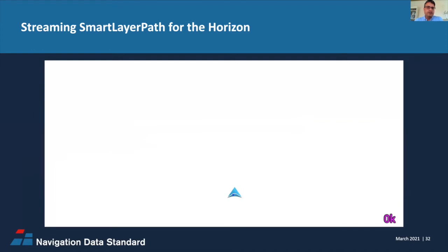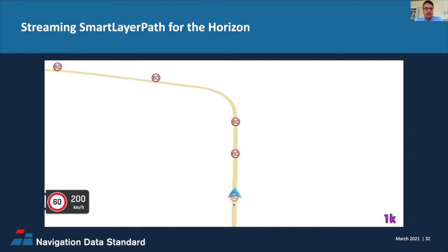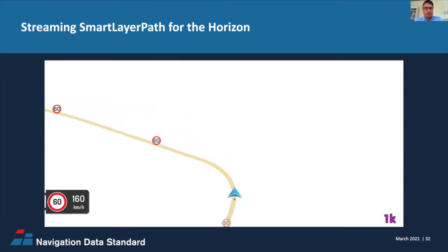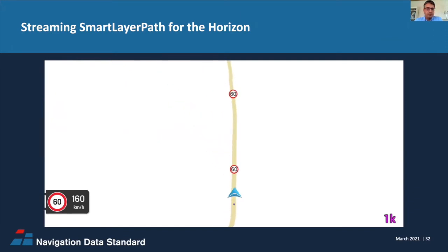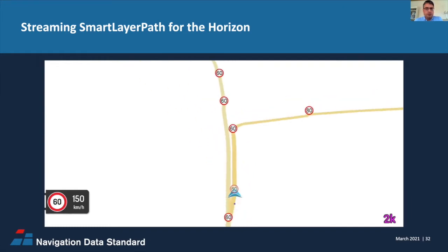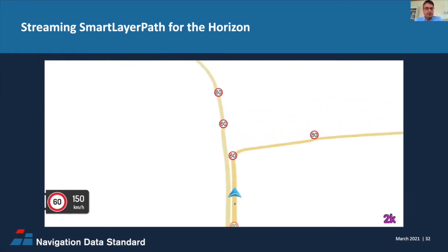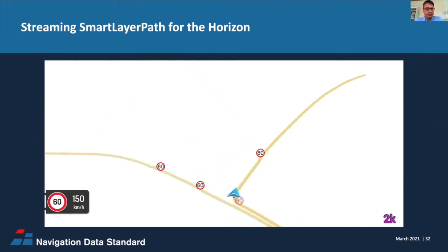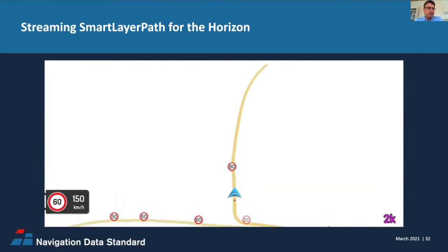Starting again with an empty cache: when the car starts moving, the first path is streamed instantly. The size of this path is only one kilobyte. All required map information is cached for the path, including the speed limit info. When deviating from the original path, a new path is streamed immediately. The previous path remains and can be persistently cached and reused later if needed.